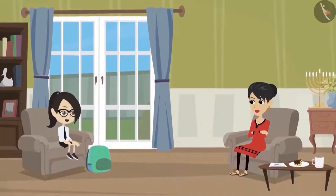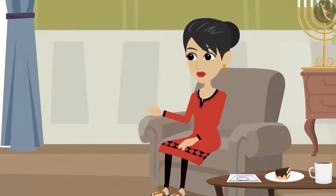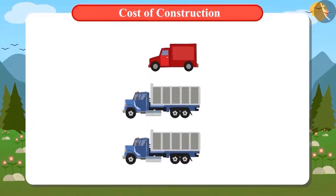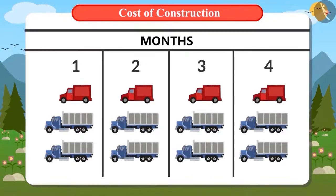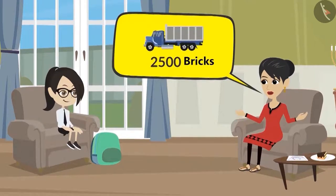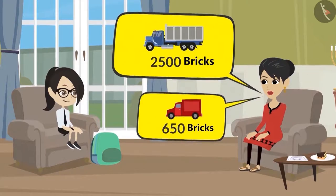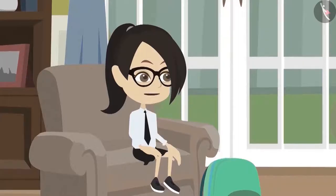Vandana informs her mum that 9 trucks still leave them 100 bricks short. Mummy explains they will not only buy bricks in big trucks — every month they will purchase 2 big trucks and 1 small truck full of bricks, and in this way all the bricks will be bought in 4 months.